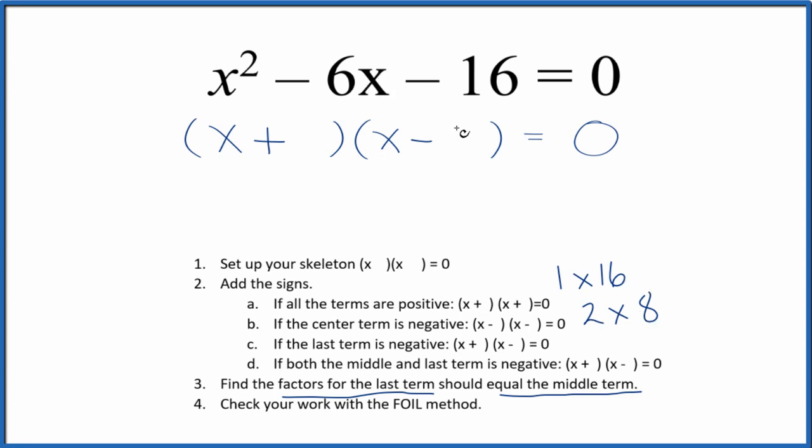So the question is, do I put the 2 or the 8 here? Since I want the middle term here to be negative, I'm going to put 8 here and then 2 here, and I'll have factored the equation x squared minus 6x minus 16.